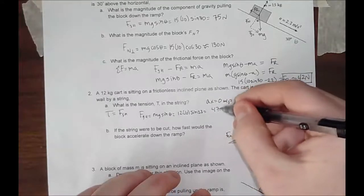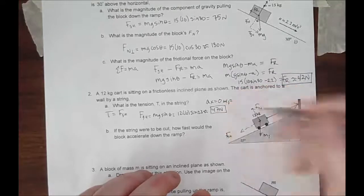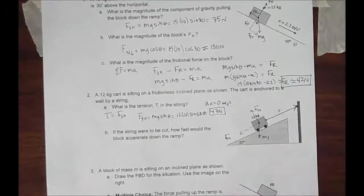That is 12 times 10 times sine of 23. So that's 120 sine of 23, and that gives approximately 47 newtons. That is the tension in the string.